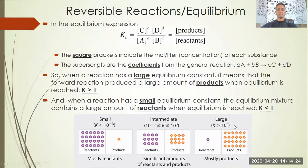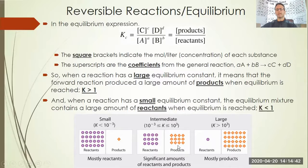Here we have a visual showing small, intermediate, and large K values. When you have a small K value, it's mostly reactants — you can see the purple circles representing reactants with only one orange diamond for the product. When you have an intermediate value — roughly between 10⁻³ and 10³ — you have significant amounts of both reactants and products. When you have a large K value, you have mostly products.